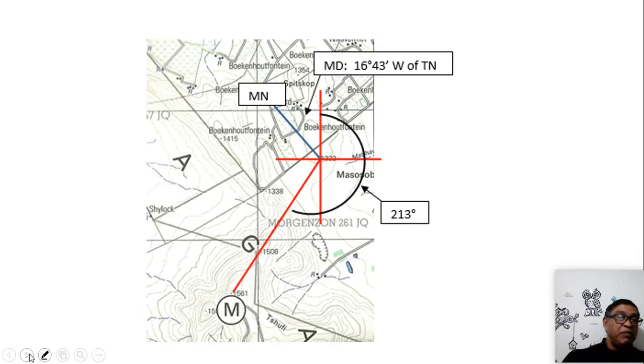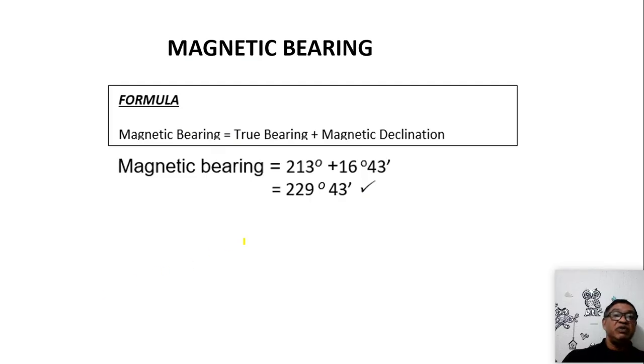So my next step would be to do the final thing. That is the calculation of the magnetic bearing, which is 213 degrees plus 16 degrees 43 minutes, which gives me a total of 229 degrees 43 minutes.